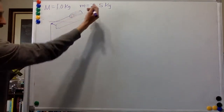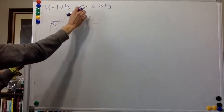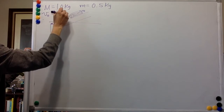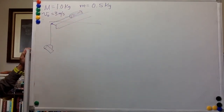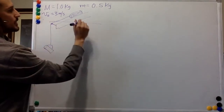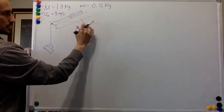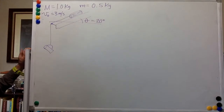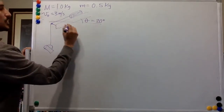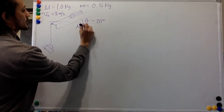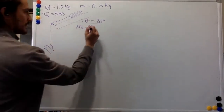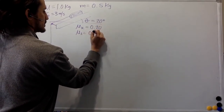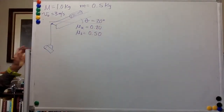The book initially has an initial velocity of 3 meters per second. The angle between the table and the horizontal, theta, is 20 degrees. The coefficient of kinetic friction is 0.2.